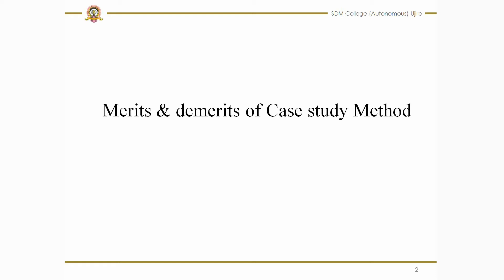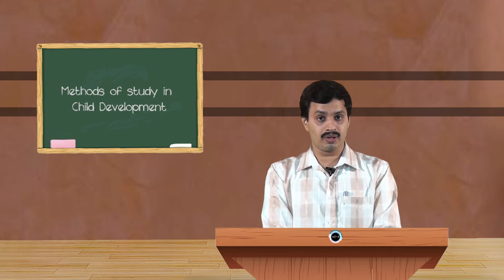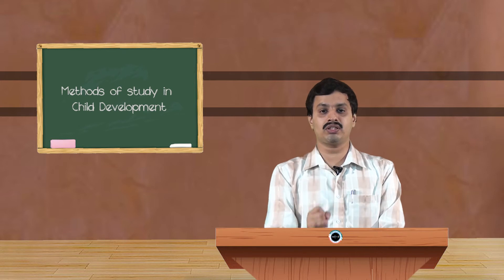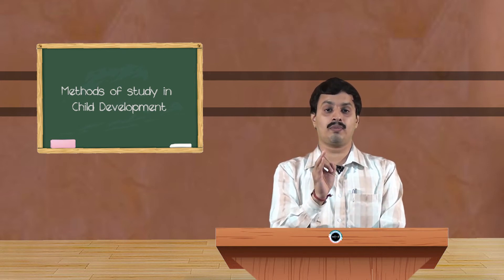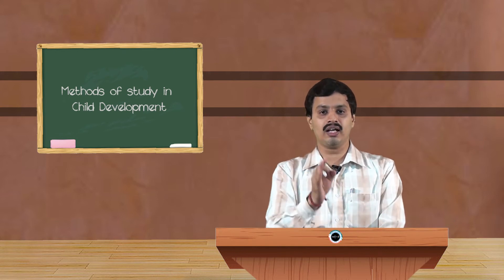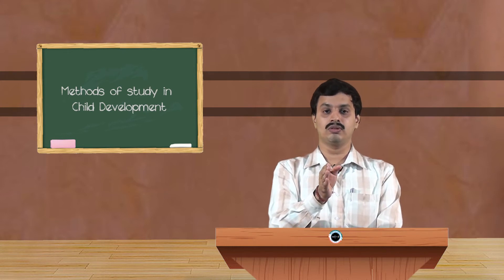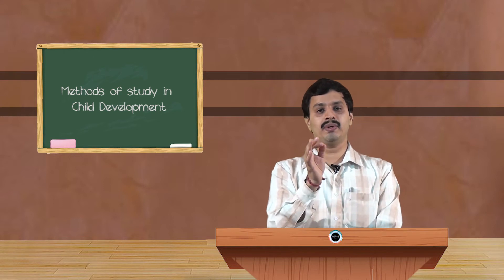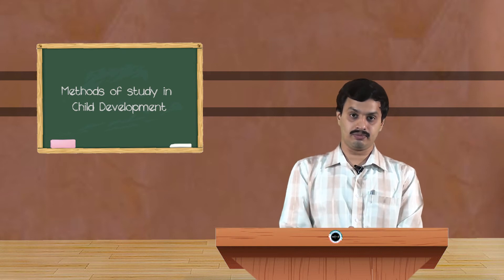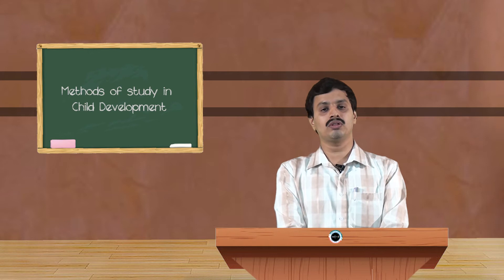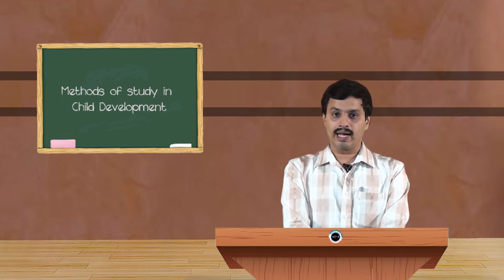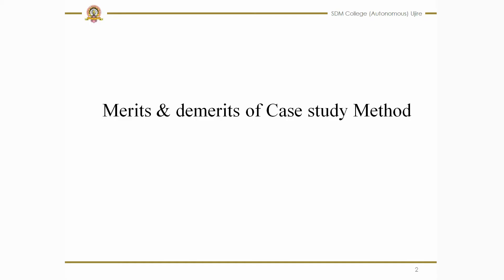There are some merits and demerits of this case study method. In case history method, we can get the past information — that is one merit — which is not possible to obtain by any other single individual tests. We gather a lot of information about the subject from the collateral, which gives reliable and standard information. That is why the case will be dealt with properly and a solution is possible. In case history method, we use standardized tests and interviews, so it is one of the standard methods. We can solve the problem based on the case history taken.